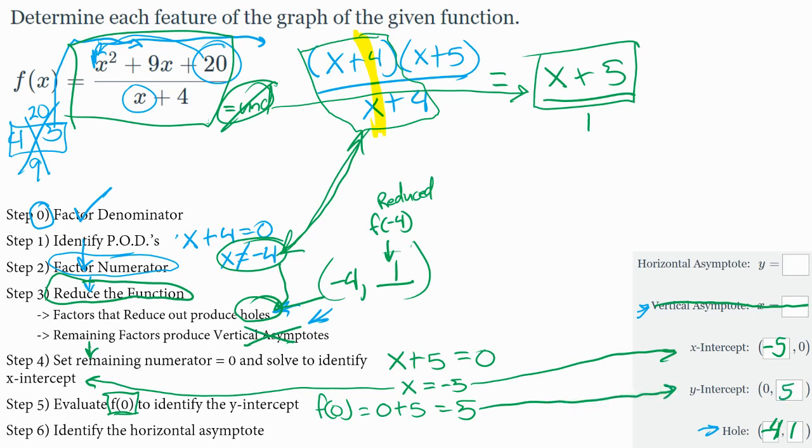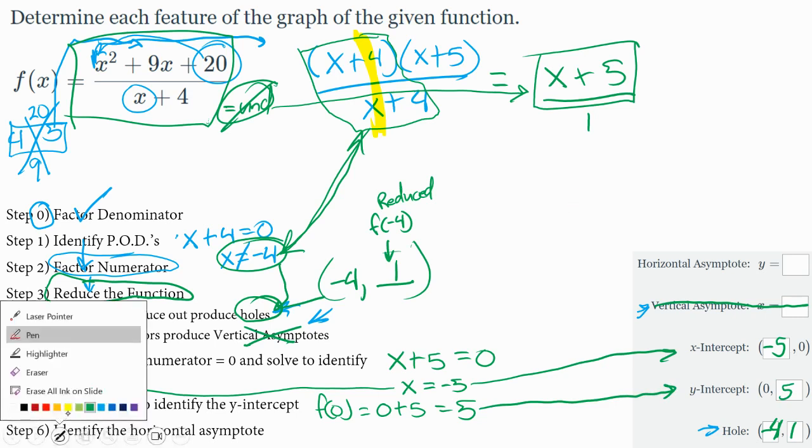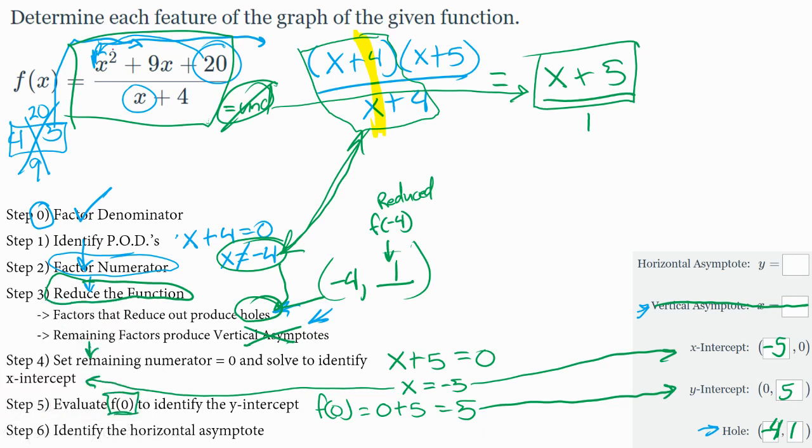Last thing we have to consider is the horizontal asymptote. And so from the beginning or at the reduced version, it doesn't matter where you look every time. The top is a 2. The bottom is a 1. The degree of the top is bigger than the degree of the bottom. And that case is always no horizontal asymptote. So I go ahead and cross that out because this graph will end up looking like a line with a hole in it. And no horizontal asymptote is the end behavior result.